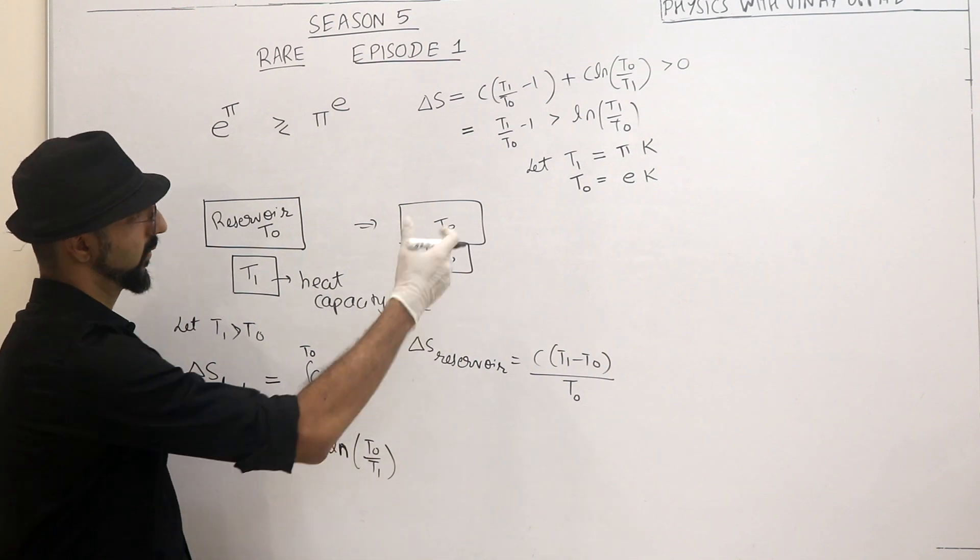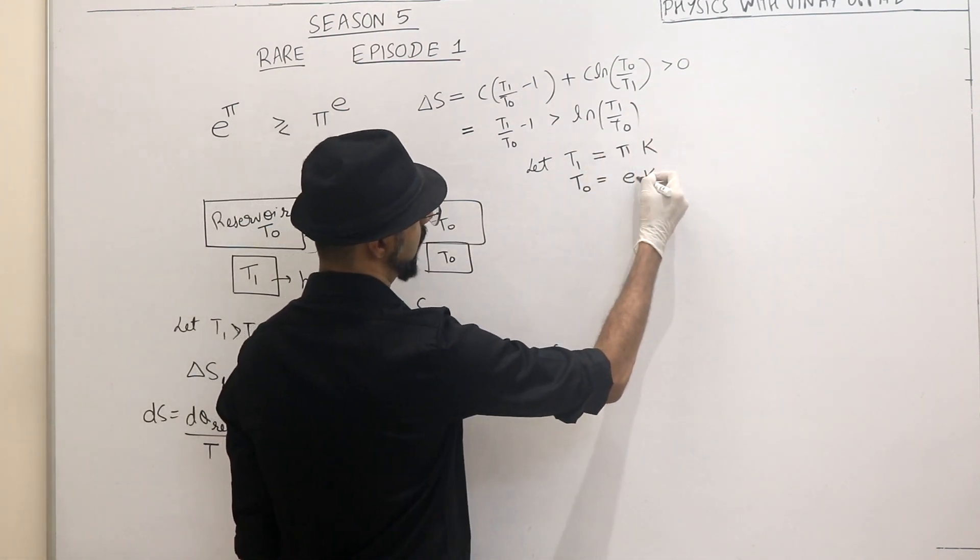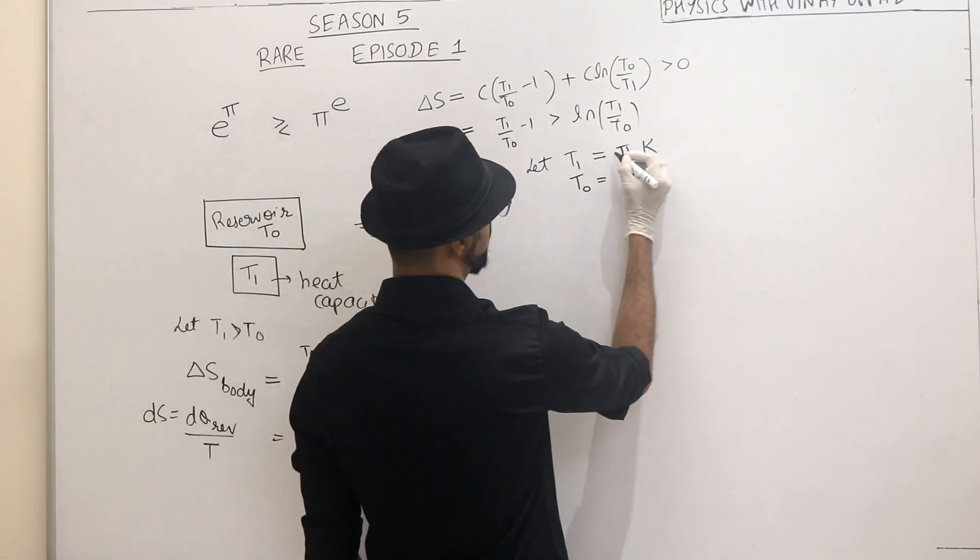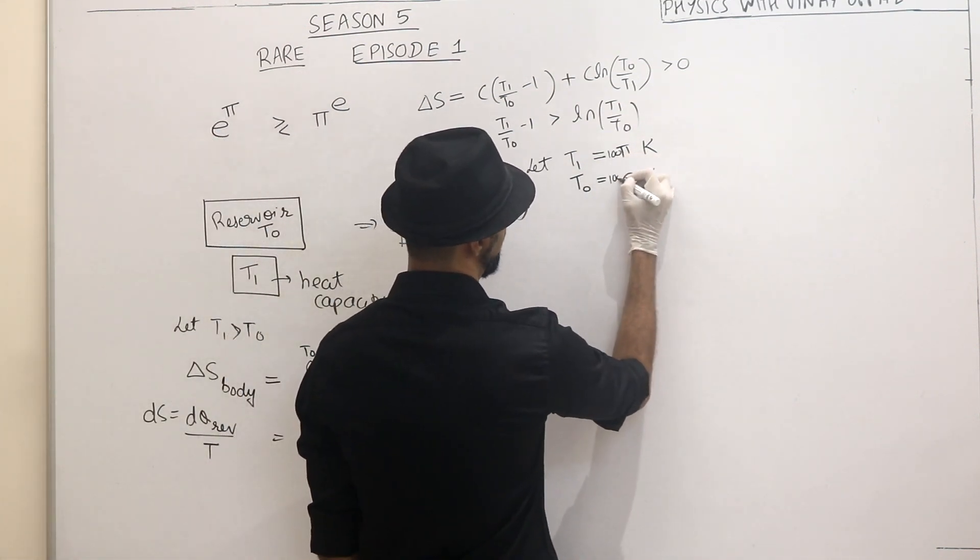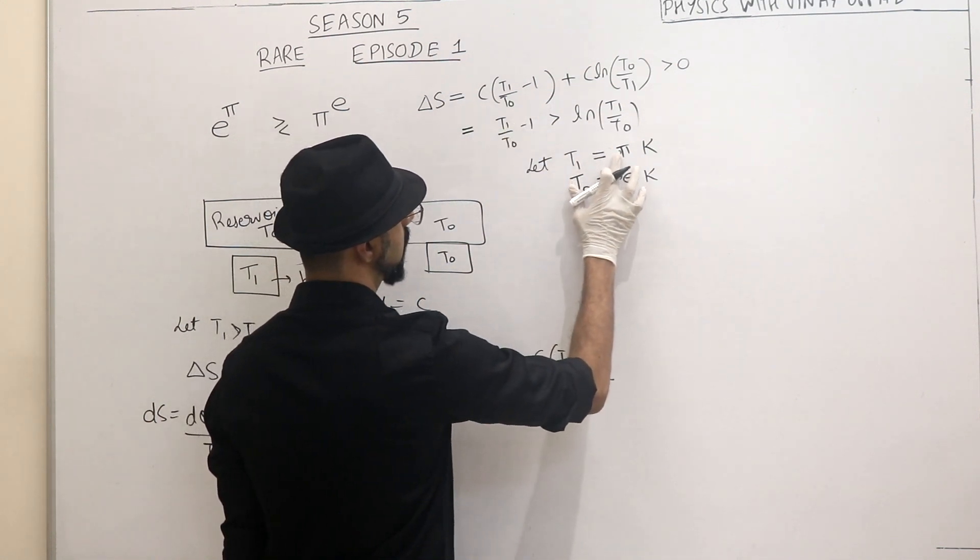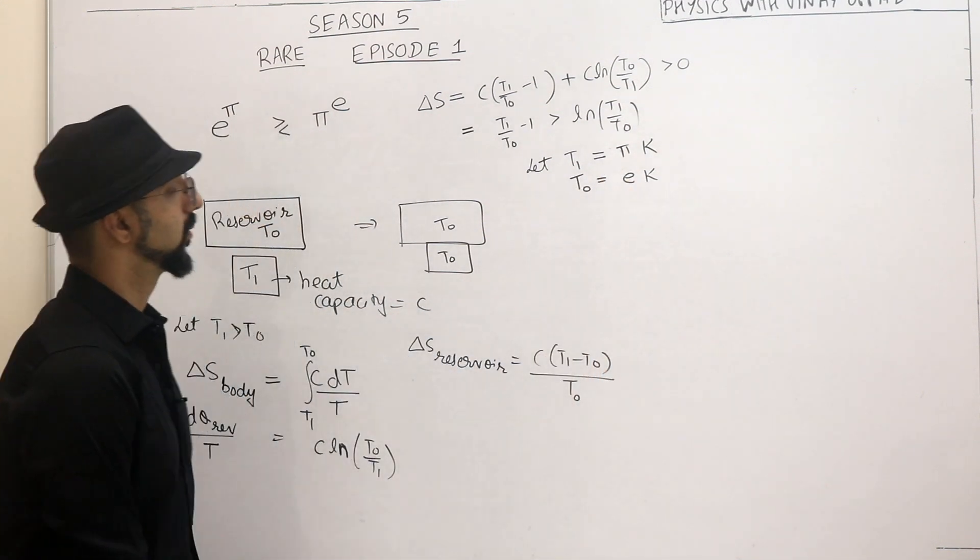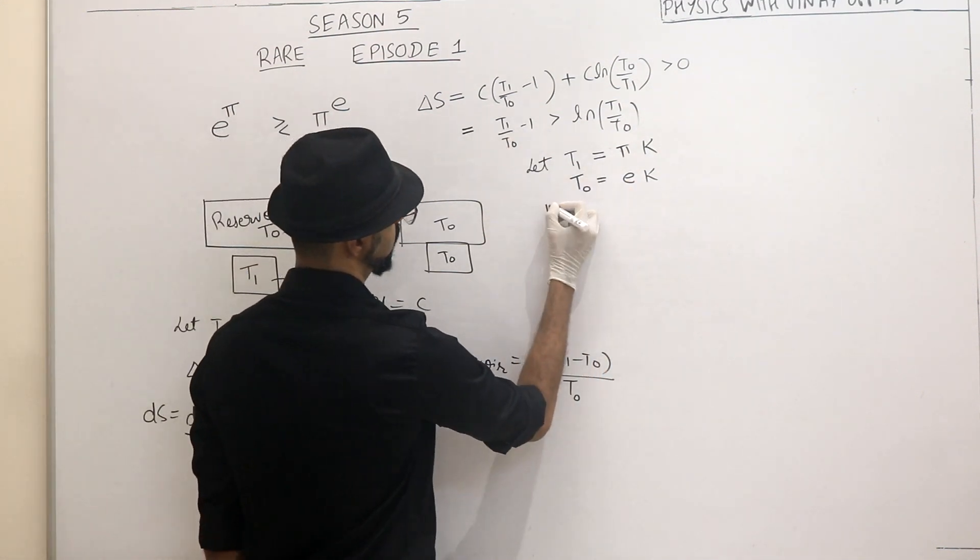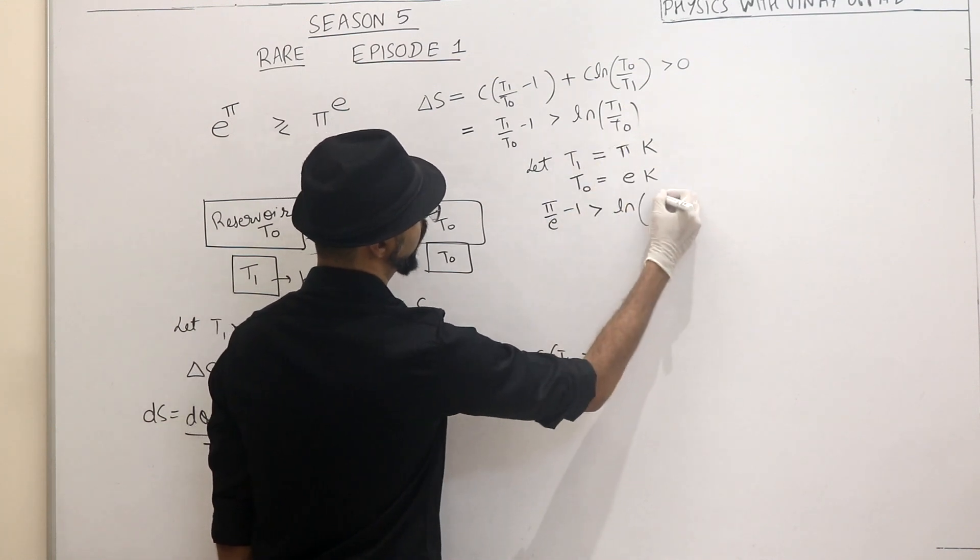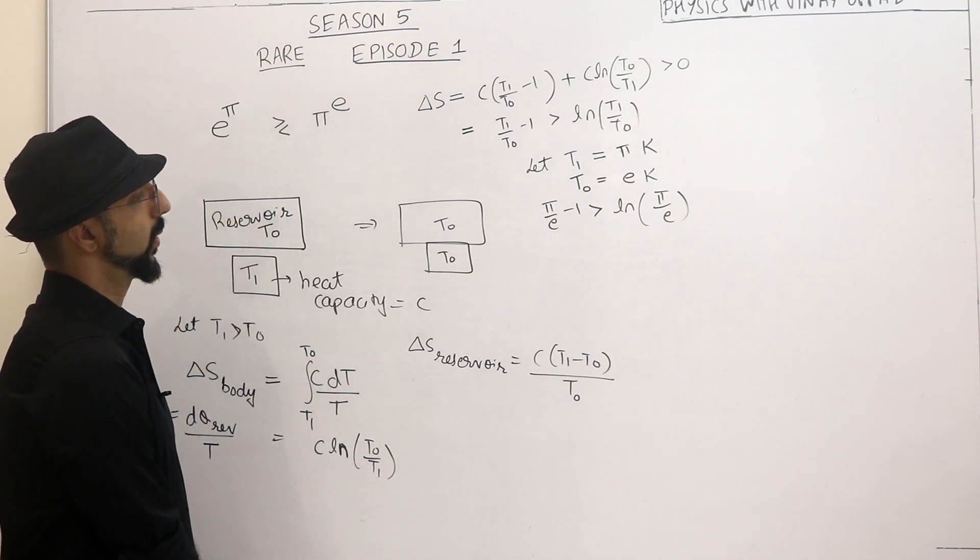What do we get? We can even choose, if you multiply here with a factor, then it will be cut. So it won't actually matter to us. We can even say some factor. Let's say 100 pi, 100 E. So when I substitute T1 and T0, then it will be cut. 100, 100 cut. Alright. Anyway. So now I'll see what I substitute. Pi by E minus 1 should be greater than ln of Pi by E. Correct. What do I get?